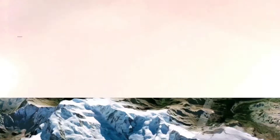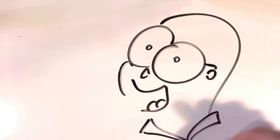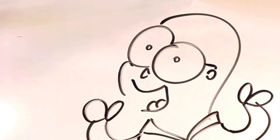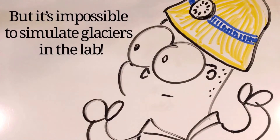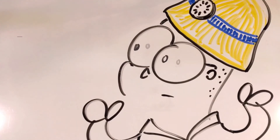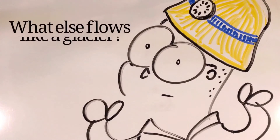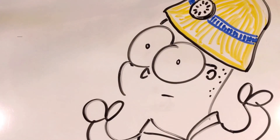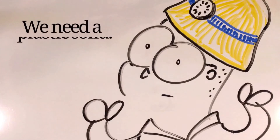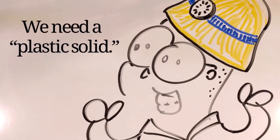In this video, we will create our own glacier models to explore how they move and behave. It's pretty much impossible to simulate glaciers in the lab with real ice — they're just too big. But we can replace the ice with something else that flows slowly, just like glaciers do. It would have to be kind of solid, like packed snow, but malleable enough to flow downhill. It must be what we would call a plastic solid.